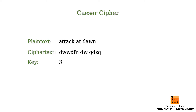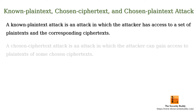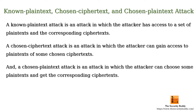To summarize: a known plaintext attack is an attack in which the attacker has access to a set of plaintexts and the corresponding ciphertexts. A chosen ciphertext attack is an attack in which the attacker can gain access to plaintexts of some chosen ciphertexts. And a chosen plaintext attack is an attack in which the attacker can choose some plaintexts and get the corresponding ciphertexts.